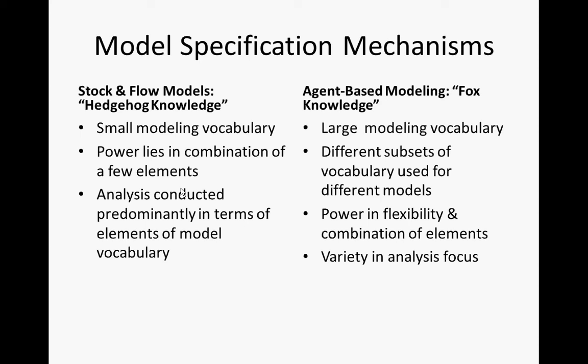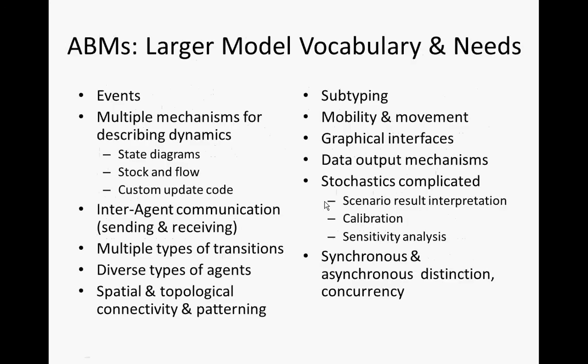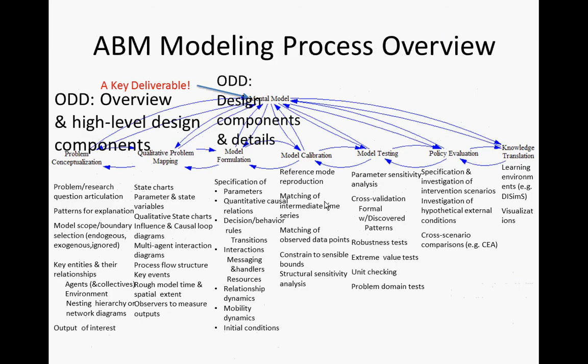There's a vicious cycle that leads software projects to go south very quickly sometimes. As an aspect of building software artifacts, modeling has some similar issues associated with it. We're going to talk about model specification of two types of models — stock and flow models and agent-based models. These are our two primary sorts of models. I've skipped forward to a slide entitled ABM Model Process Overview, which applies to the agent-based modeling process most particularly, but the general stages here are in common with system dynamics modeling.